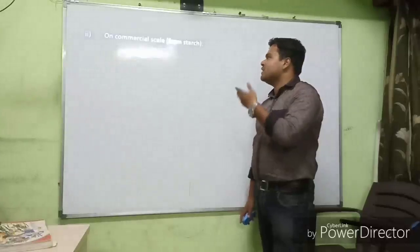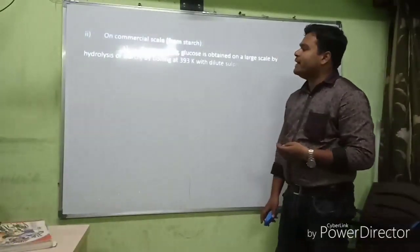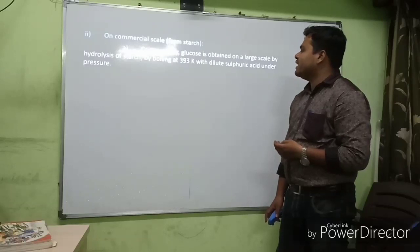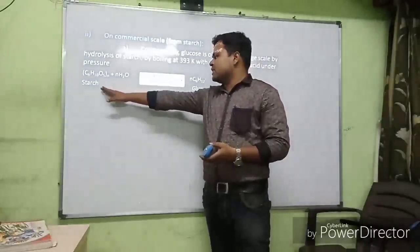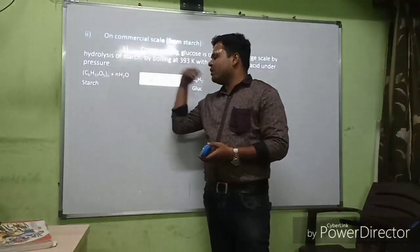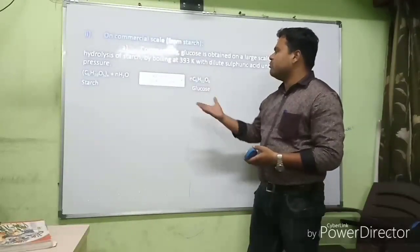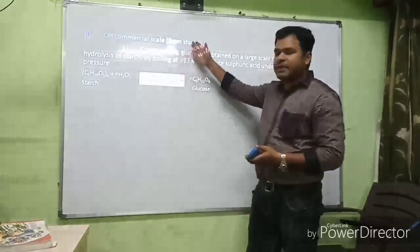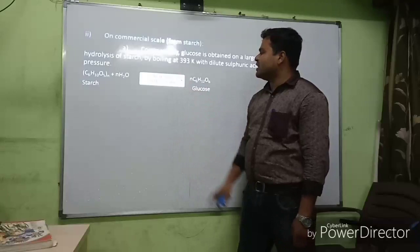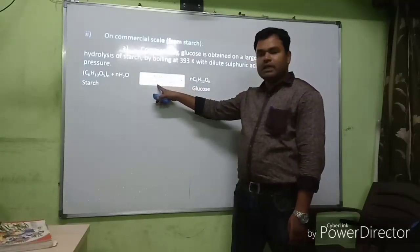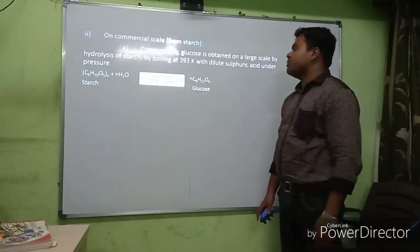On a commercial scale, glucose is obtained in large quantities by hydrolysis of starch by boiling at 393 K with dilute sulfuric acid under pressure of 2–3 atmospheres. Starch is a polysaccharide and on hydrolysis gives a large number of glucose molecules, which is why this is done on a commercial scale.